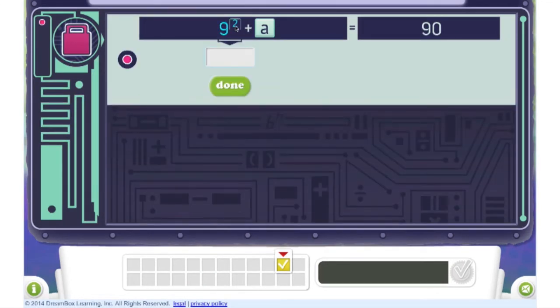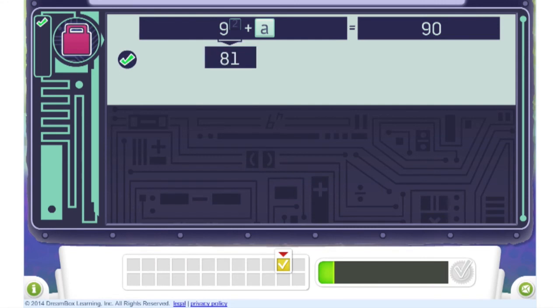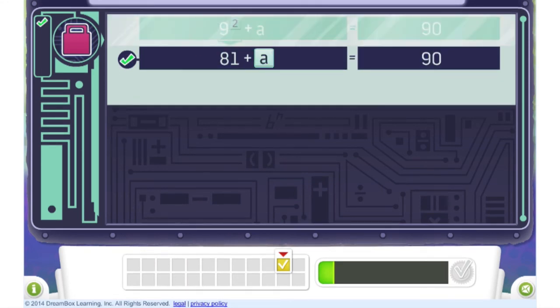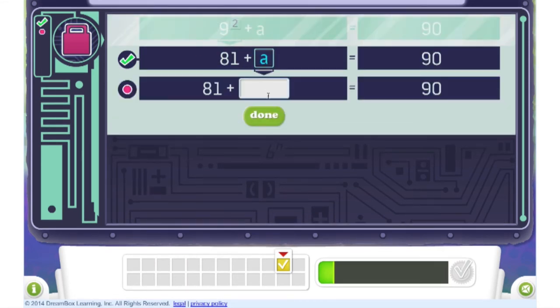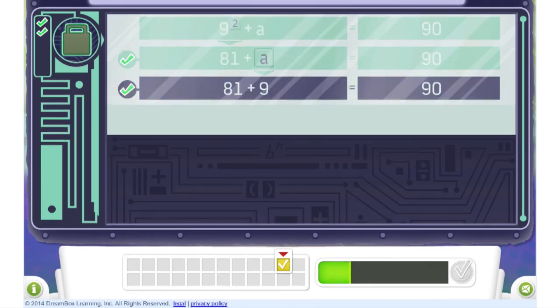Students also engage with this DreamBox order of operations control panel as one way to learn to solve equations containing variables. As in the other lessons, students must honor the order of operations. But now they also need to use the variable button to solve the equation by substituting the correct value for the variable.